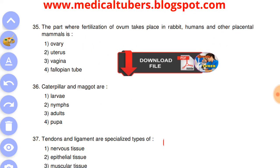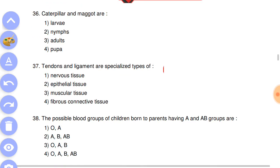Next question: the part where fertilization of ovum takes place in rabbits, humans and other placental mammals - answer is the fourth, fallopian tubes.